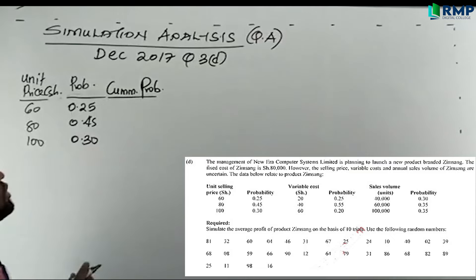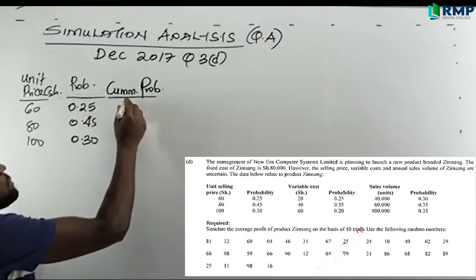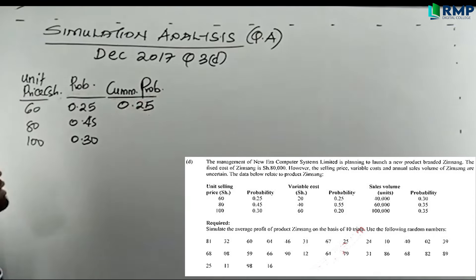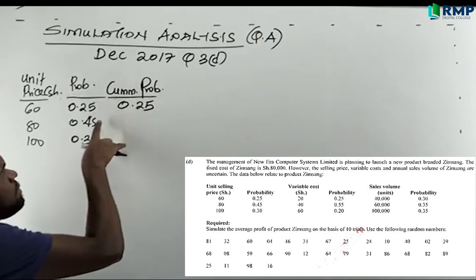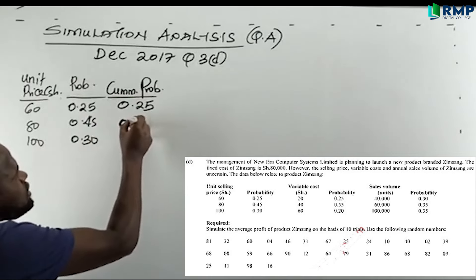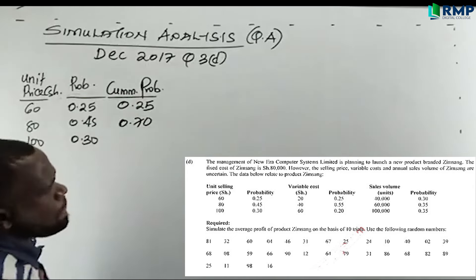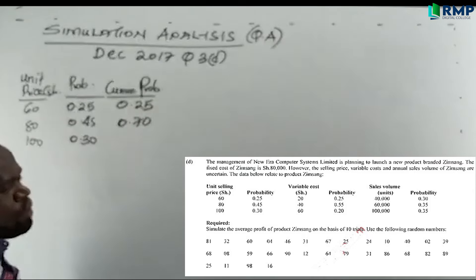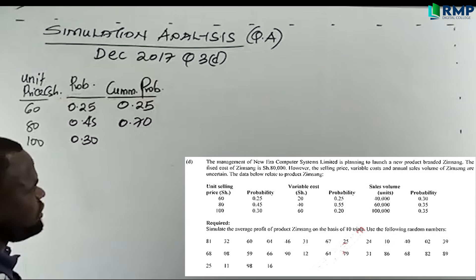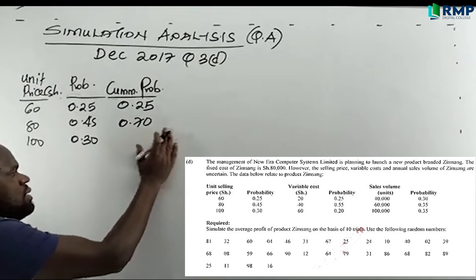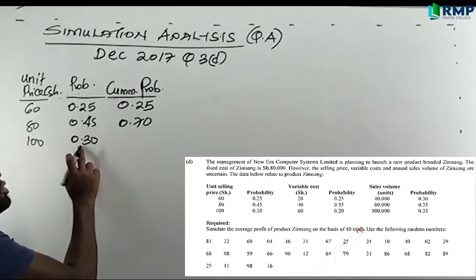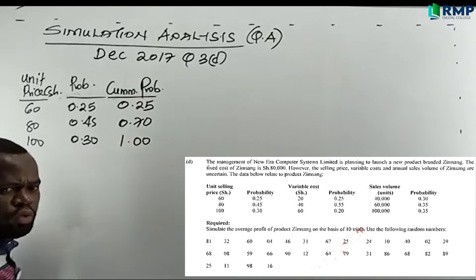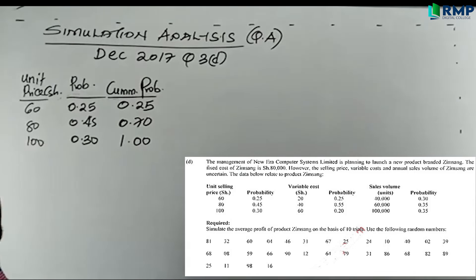For cumulative probabilities, we start from the first probability: 0.25. Add 0.45 to get 0.70 — keep two decimal places, write 0.70 not 0.7, because in simulation two decimals matter significantly. Add 0.30 to get 1.00, written as 1.00, not 1.0, because these zeros are important in simulation.